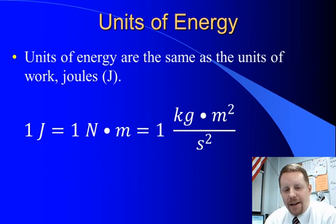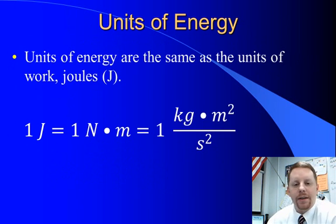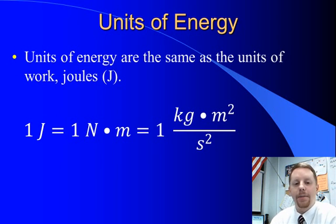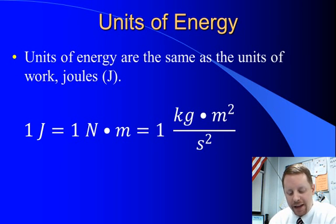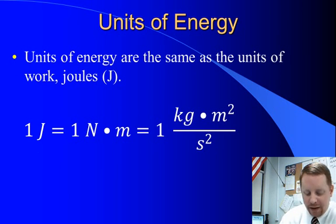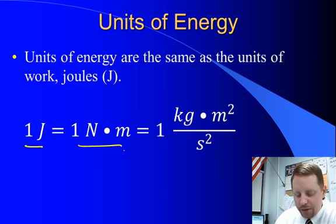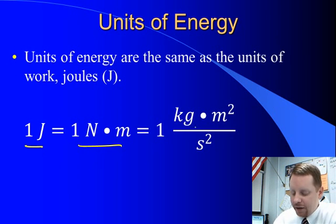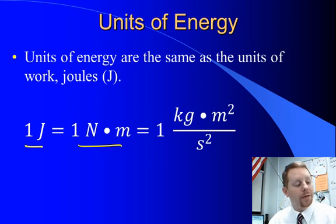Now, units of energy are the same as the units of work, since if you do work on something you give it energy, they have to have the same units. These are known as joules, which we abbreviate with a capital J — not to be confused with impulse, which we also often write with a capital J. One joule is equal to a newton times a meter, but if we break up a newton into its SI units, we see that a joule is actually a kilogram meter squared per second squared. So all of these are equivalent.